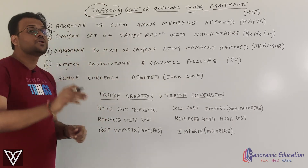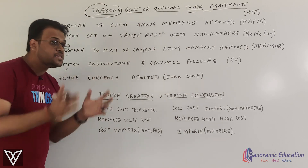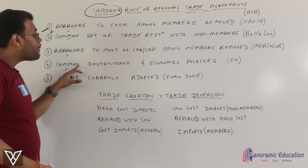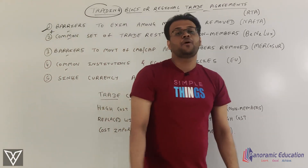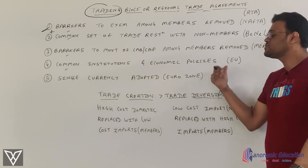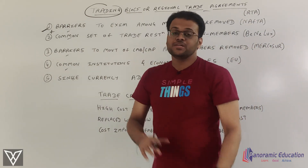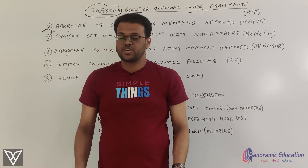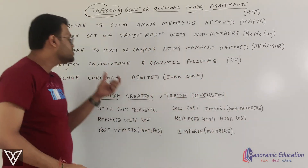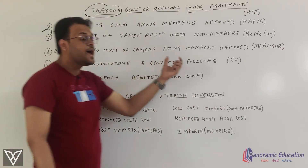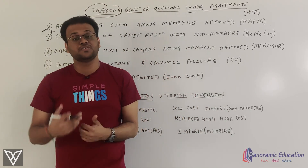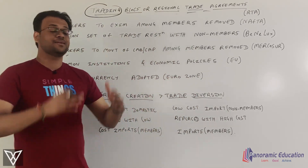The fourth point is the economic union, which includes all the first three points plus common institutions and economic policies. The best example is the EU — the European Union — which has a common central bank, the European Central Bank (ECB), common monetary institutions, and shared economic and fiscal policies.